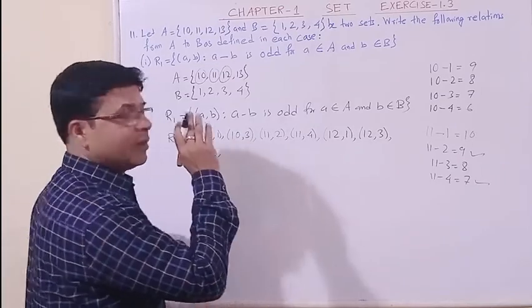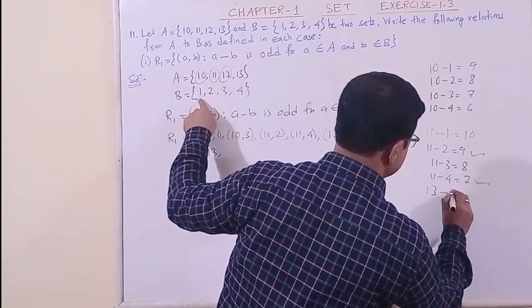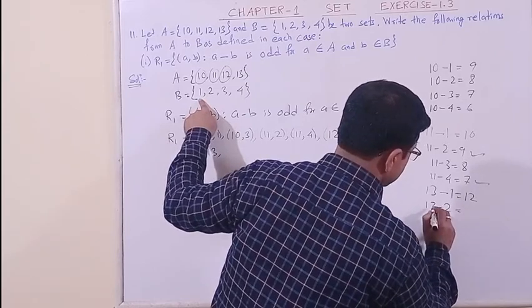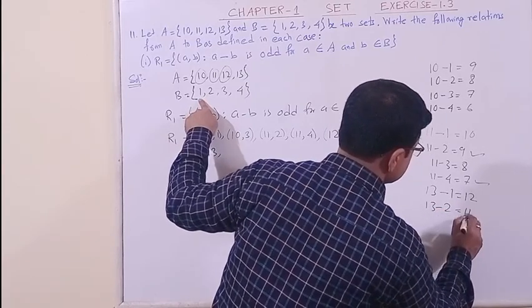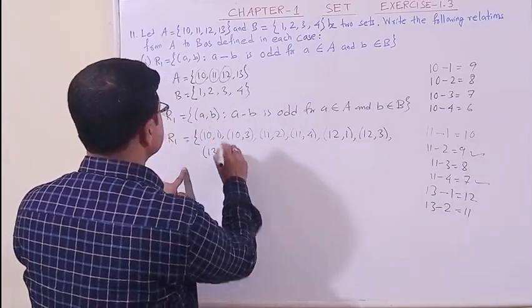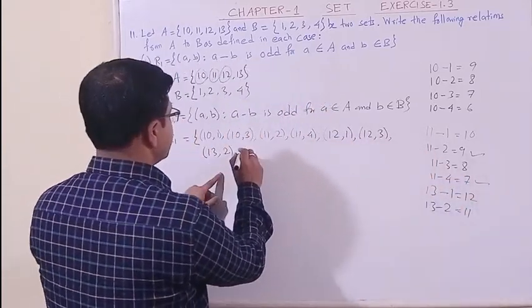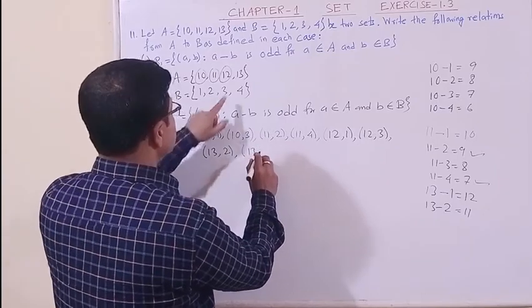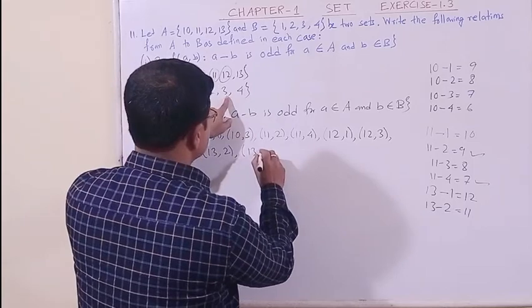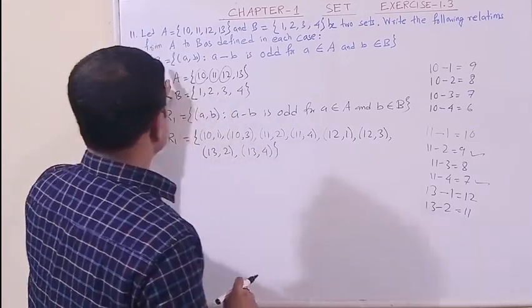13 is an odd number, so odd minus even. 13 minus 1 is 12, 13 minus 2 is odd. Odd minus even is how much? Odd. So 13 minus 2 is odd. The pairs are (13, 2) and (13, 4). Because if we take 1, it will be an even number. So this is the solution of this first part.